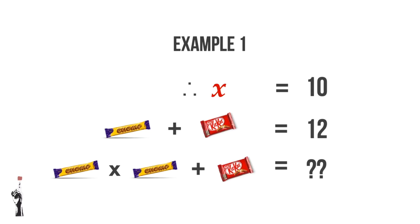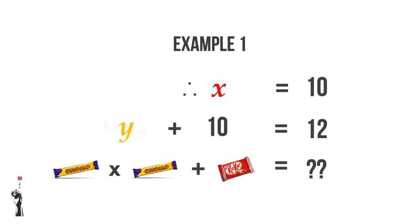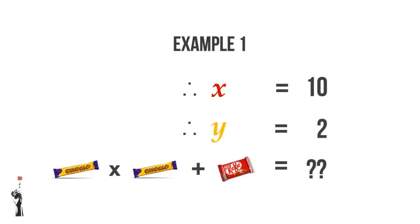So in the second line we have yellow chocolate plus red chocolate equal to 12. But we already know that red chocolate is equal to 10, so we can replace it. Now instead of talking about yellow chocolate plus 10 equal to 12, we can replace the yellow chocolate with another variable Y. So Y plus 10 is equal to 12. Y must then be equal to 2.